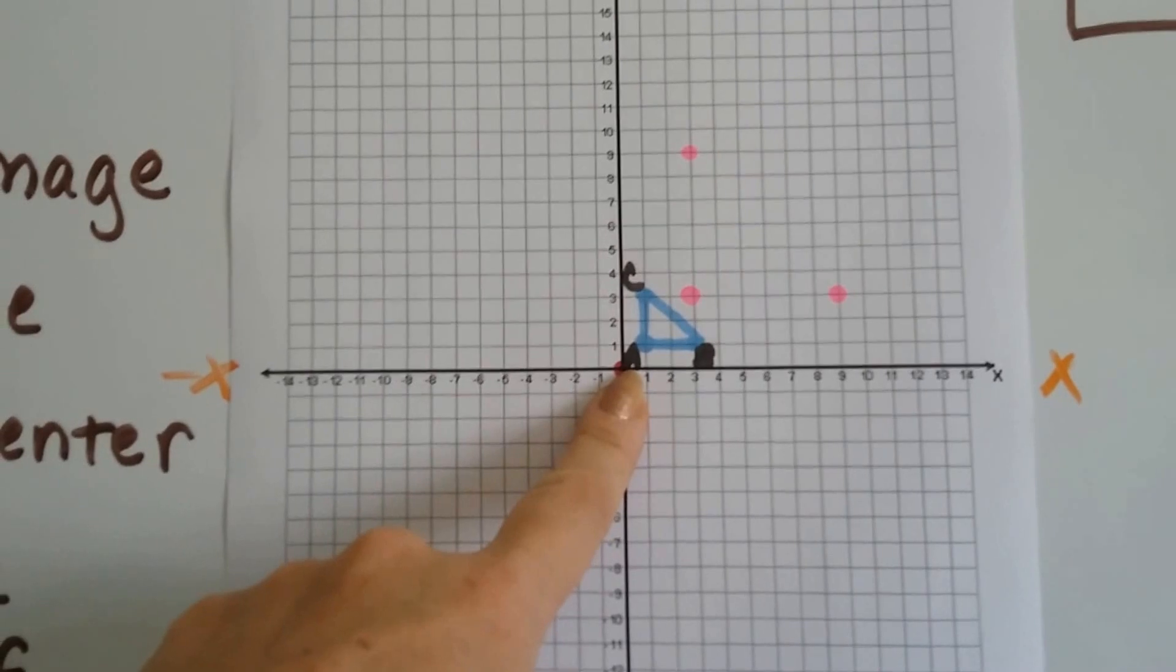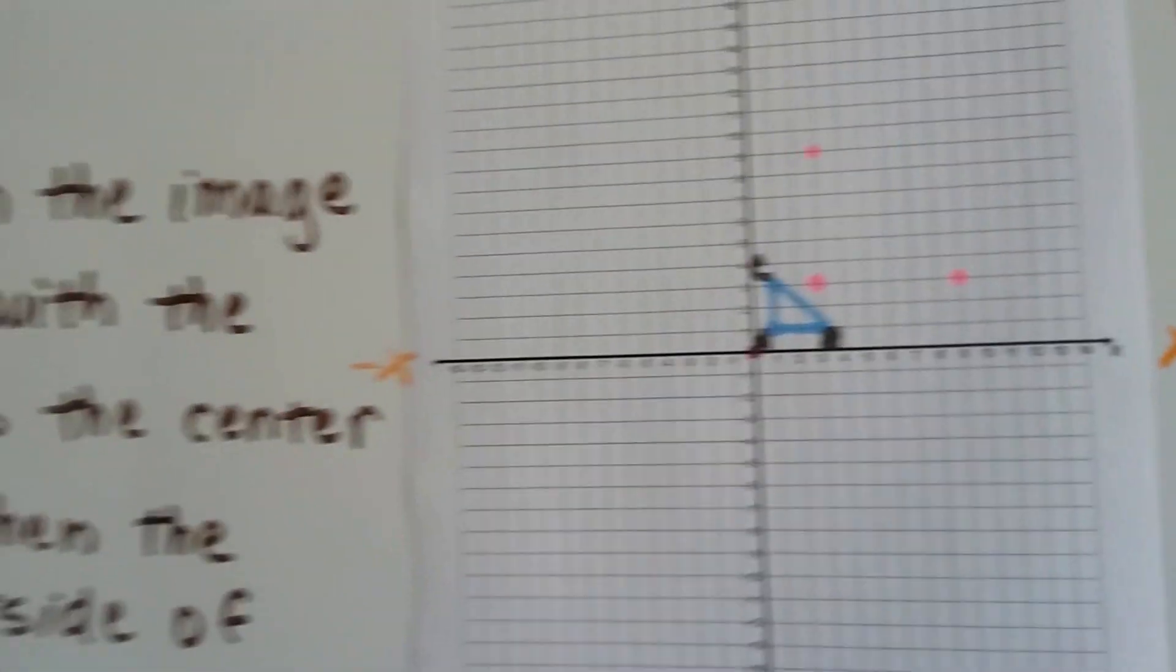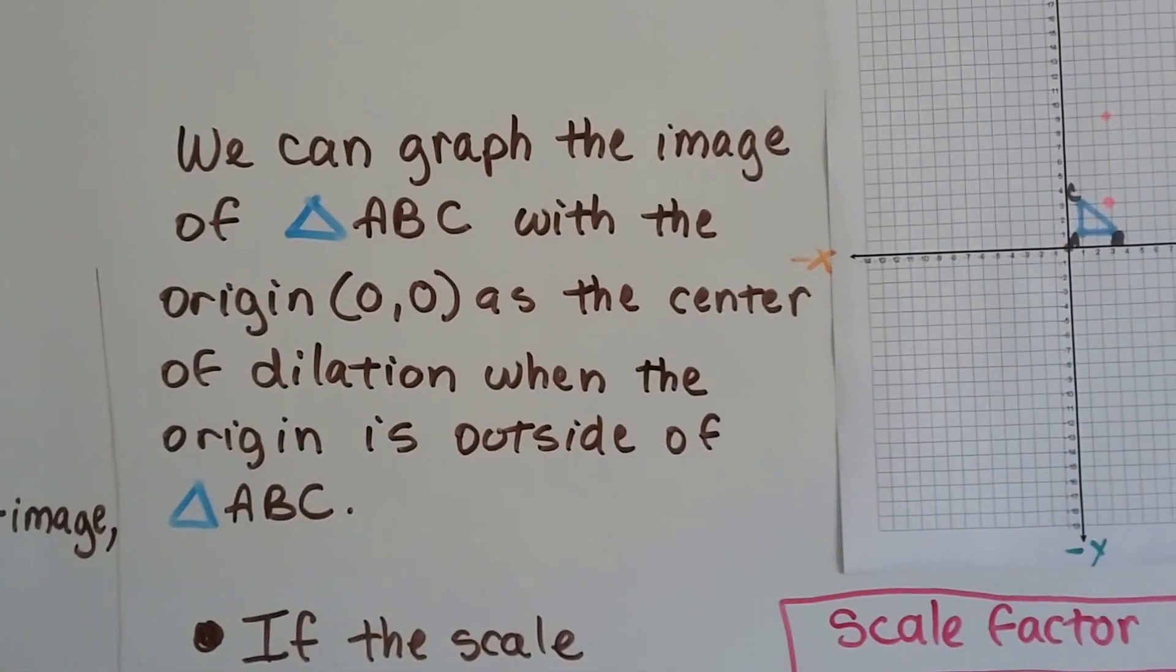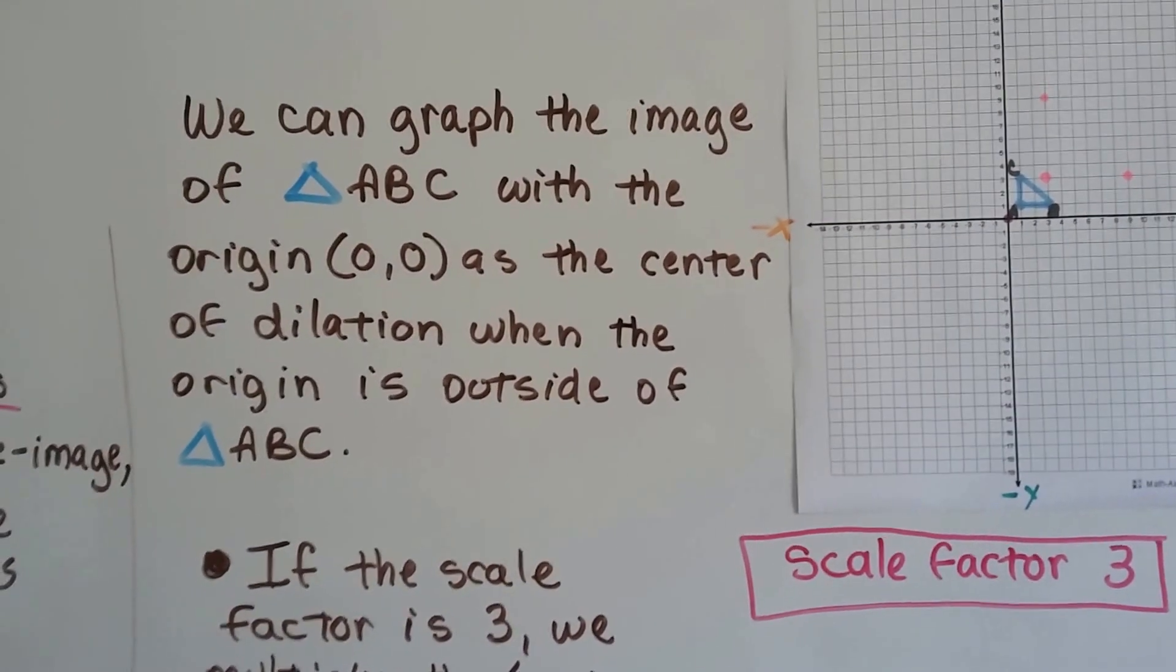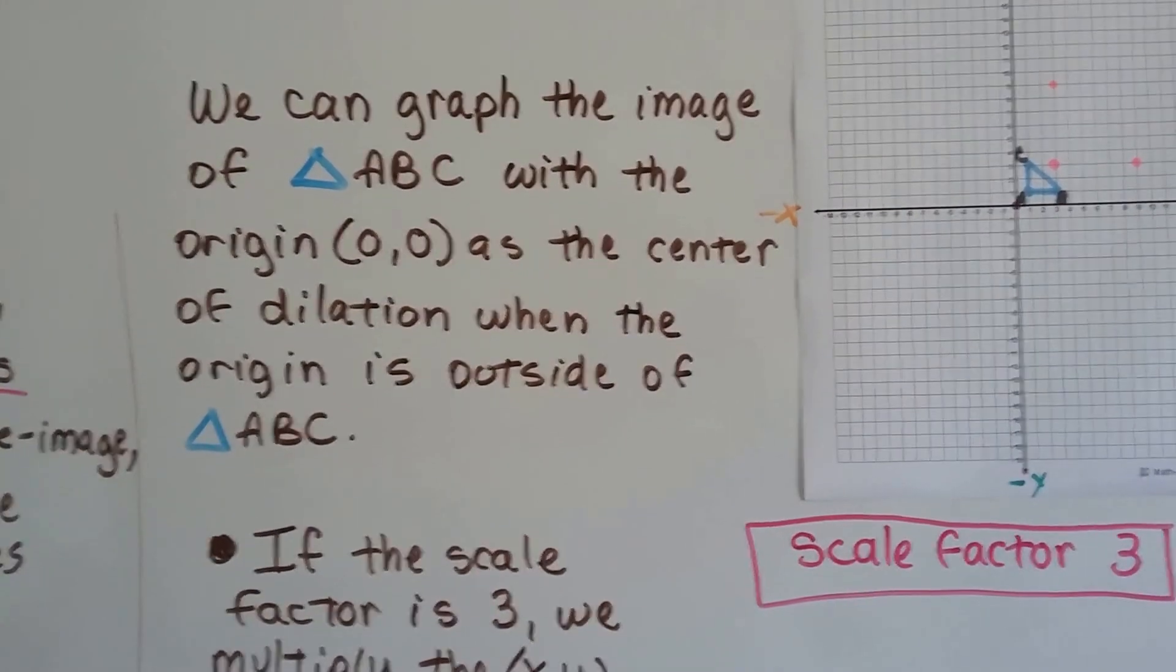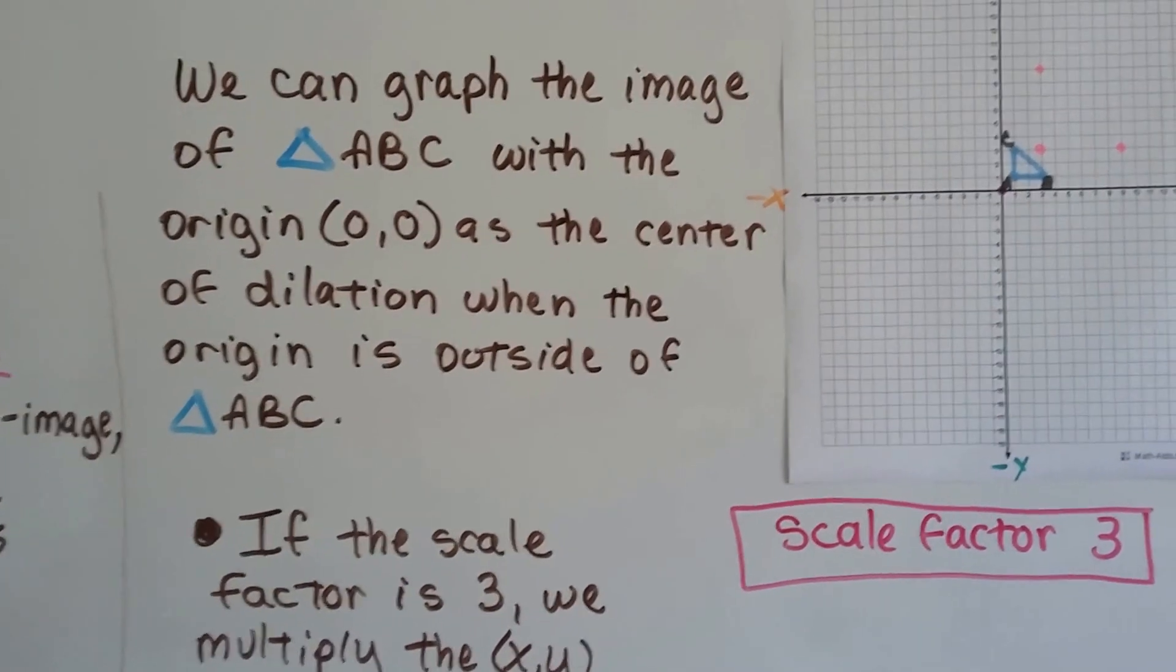It's still the origin (0,0), but now we're going to go up this way. We can graph the image of triangle ABC, the blue one, with the origin (0,0) as the center of dilation when the origin is outside of ABC, the blue one.